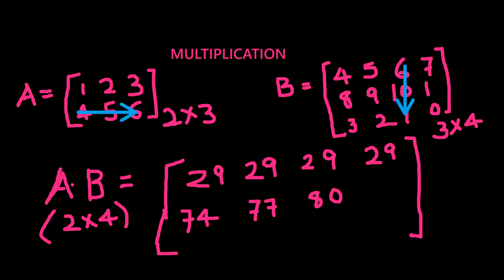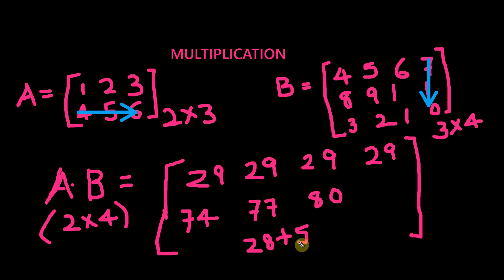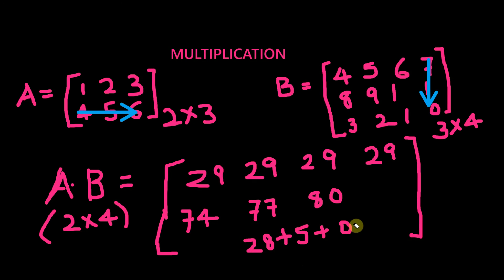Next, we need to find the second row, fourth column value — that is the final value. We multiply 4, 5, 6 with 7, 1, 0. So 4×7 is 28, plus 5×1 is 5, plus 6×0 is 0. That sums up to 33. So the second row, fourth column value is 33.